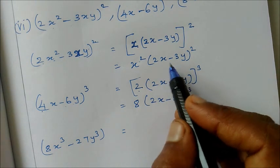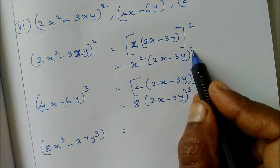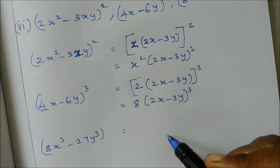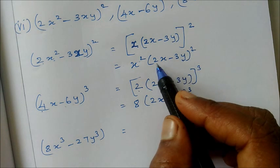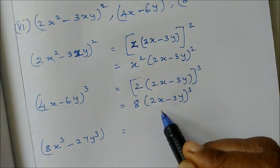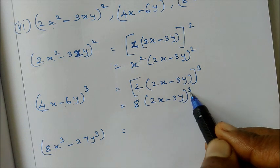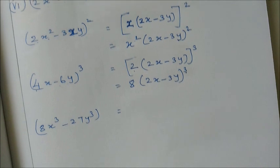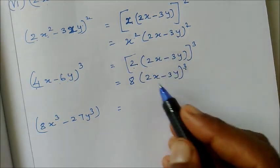If you need 2x minus 3y the whole square, you can use identities. For final simplification we can use identities. For 2x minus 3y the whole cube, we have higher power to consider.